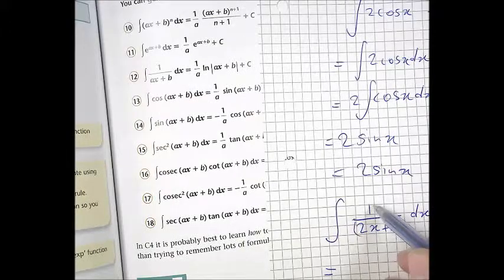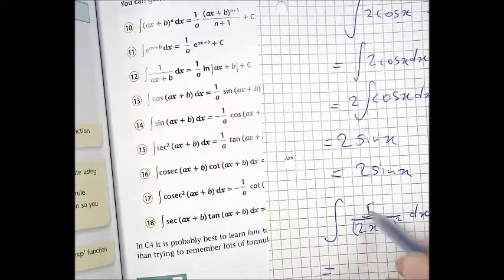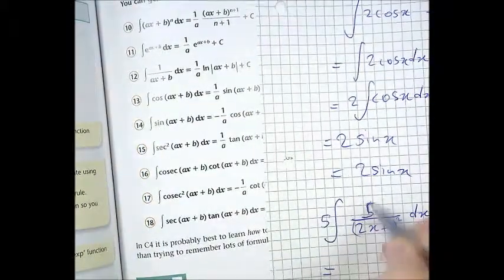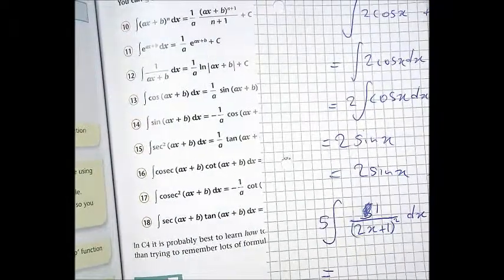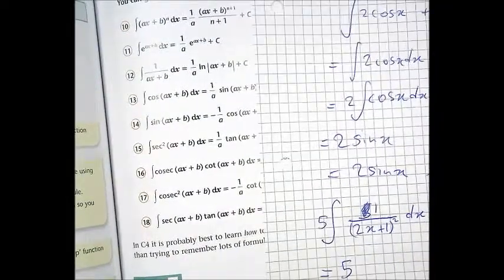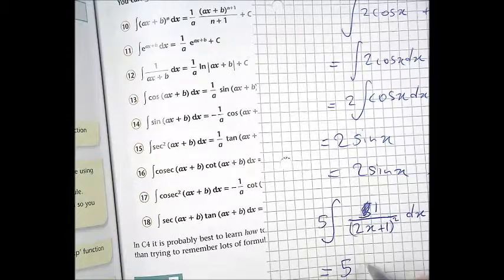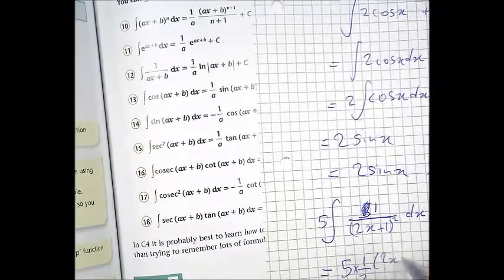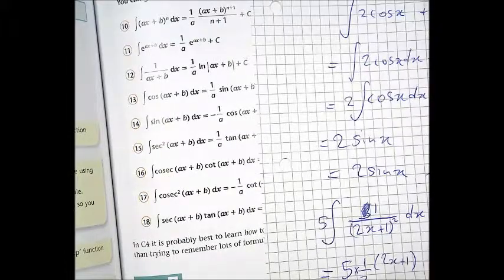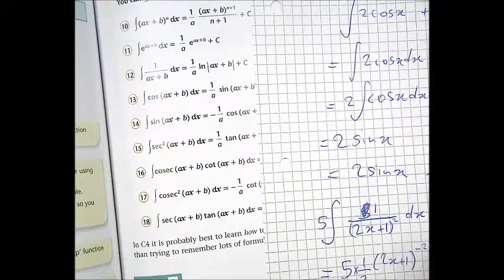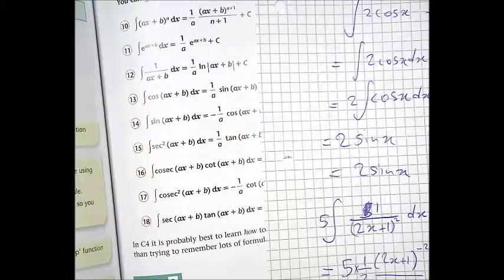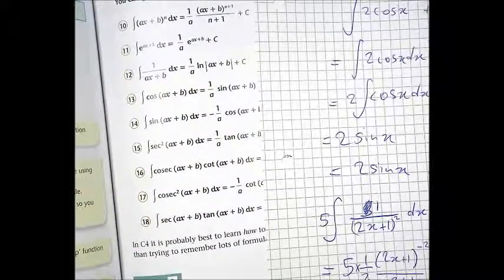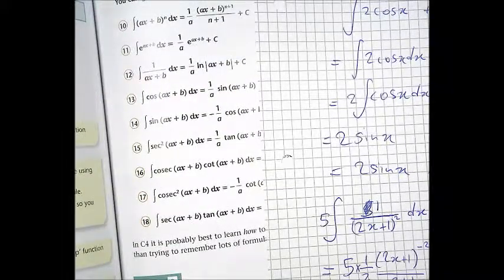Now, remember, if there'd been an inconvenient number there, just move it out by my-osmosis. In fact, let's do that example. So now we just write out the right. So 1 over 2, 2x plus 1, negative 2 plus 1, all over negative 2 plus 1, plus C. And then you tidy that up.